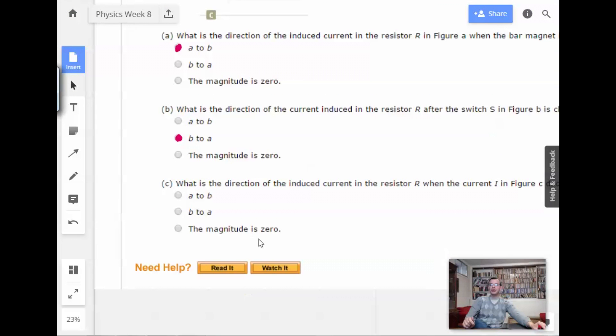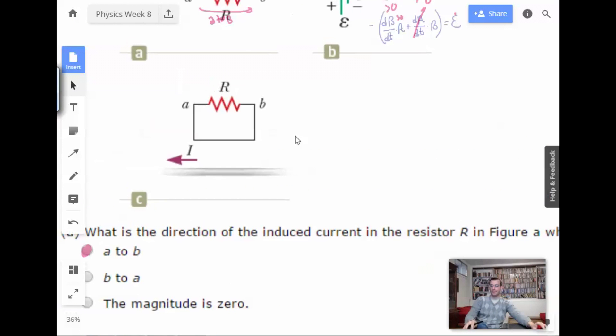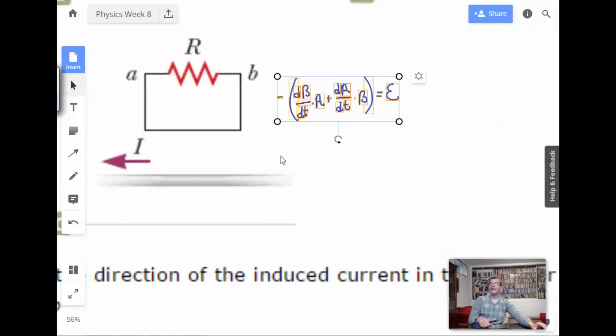So now for the last part. What is the direction of the induced current in the resistor R in figure C when the current I in figure C decreases rapidly to zero. Bam. Yes. Still saved it. Still got it.